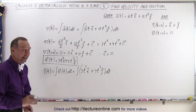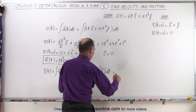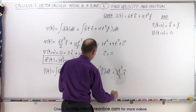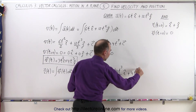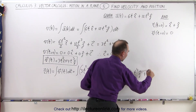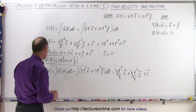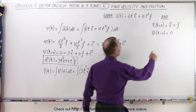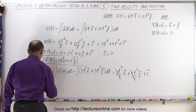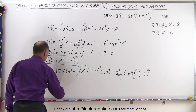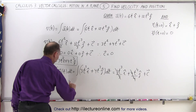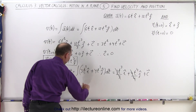When I integrate that I get: 3t cubed over 3 in the i direction — notice the 3s cancel out — plus 4t to the fourth over 4 in the j direction — the 4s cancel out — plus some constant of integration. If we set t equal to 0, we get i plus j, which means our constant of integration is i plus j. So r as a function of time equals t cubed in the i direction plus t to the fourth in the j direction plus i plus j.